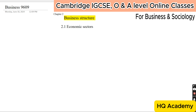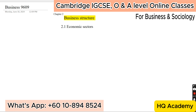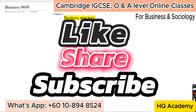Today we have to discuss chapter number two: business structure. Yesterday we finished chapter number one, and in the last lecture we were discussing the business plan. After completing the business plan, we discussed a few case studies as homework. Today we are going to start chapter number two, which is business structure. In business structure, we will complete topic 2.1, the economic sectors. In business, we have different categories of economic sectors, and we divide them into four different parts.